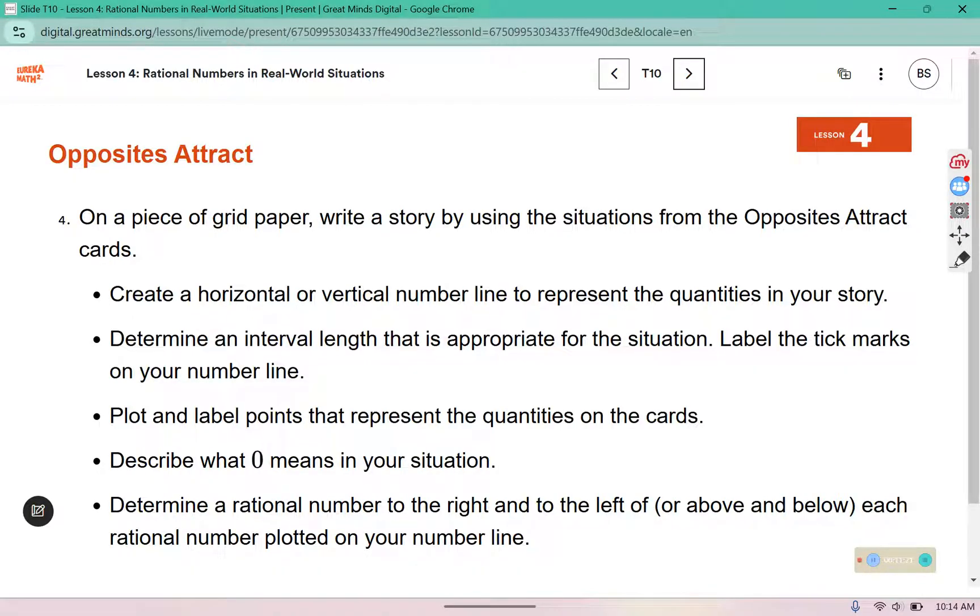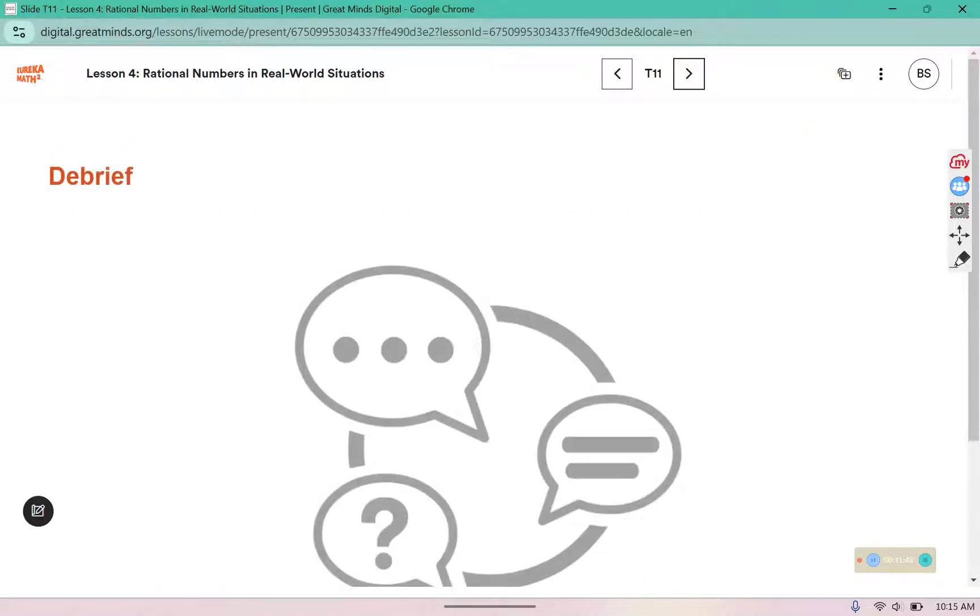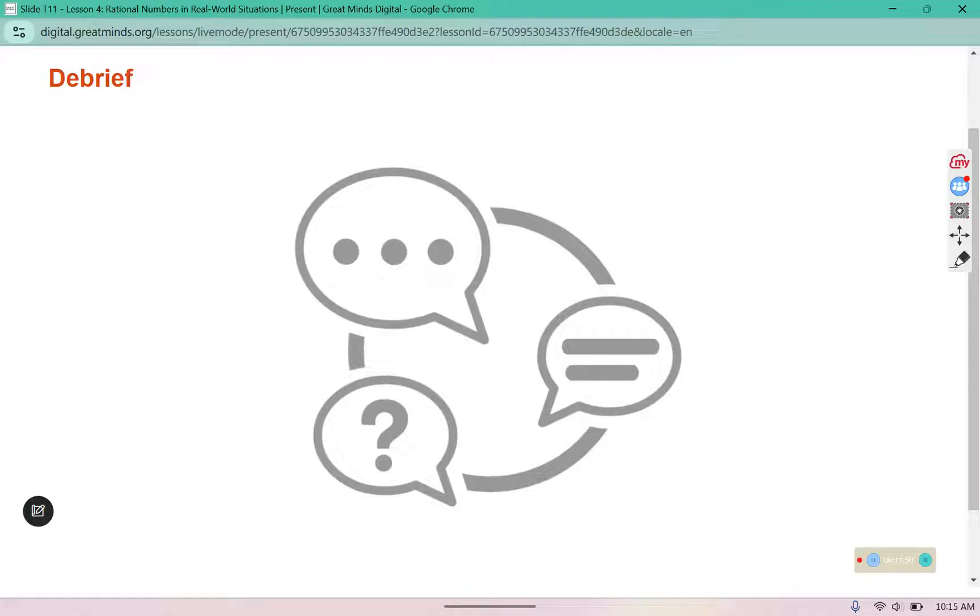This is an activity that would be done in class. You would get a card that indicates either a positive value or a negative value. And you would work to find who in the class has the opposite of your card and then create the number line accordingly and plot your points on there. We're going to skip this for the sake of the digital or the online video lesson. And then just make sure that your workbook and your warmups are filled in and complete. Have a great rest of your day and I'll see you in the next one. Bye.